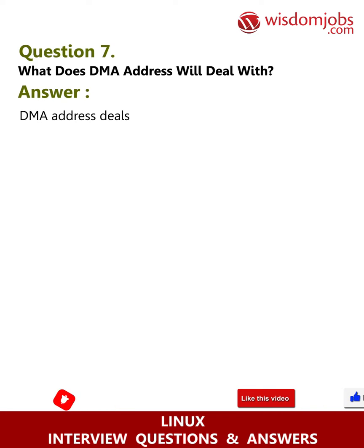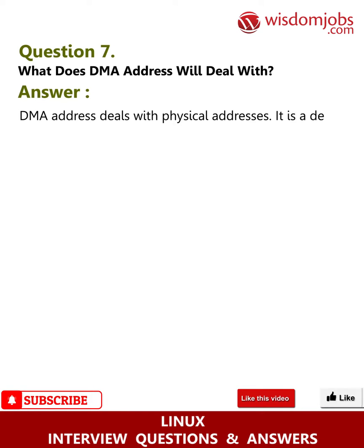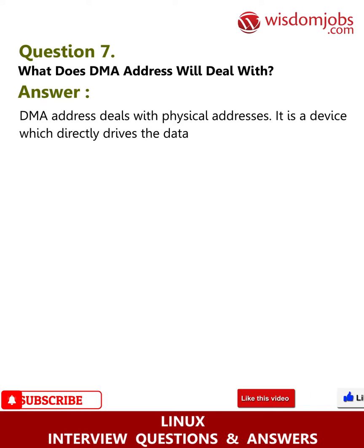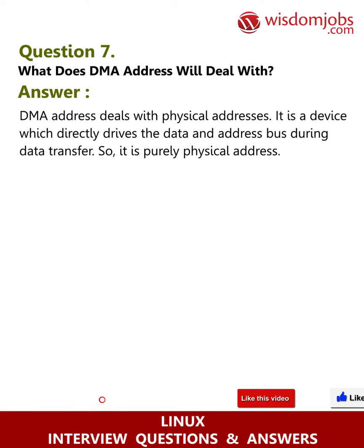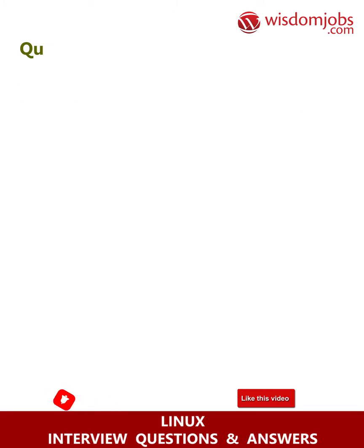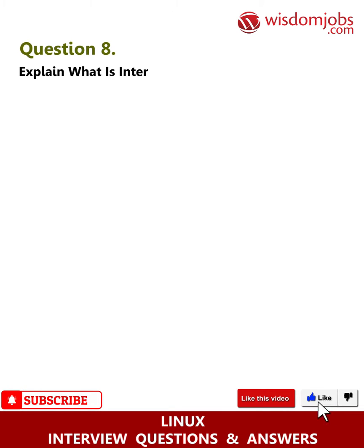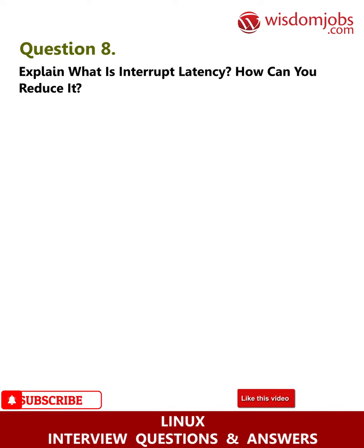DMA is a device which directly drives the data and address bus during data transfer, so it is purely a physical address. Question 8: Explain what is interrupt latency and how can you reduce it? Answer: Interrupt latency is the time taken to return from the interrupt service routine post handling a specific interrupt.